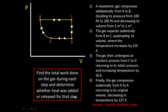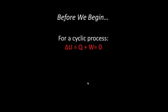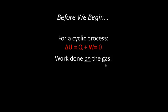We also need to determine whether heat was added or released for each step. Before we begin, let's go over some review. For a cyclic process, delta U equals Q plus W, or the change in internal energy equals heat plus work. This term always equals zero, because in a cyclic process on a PV diagram, you always start and end in the same place. We're going to focus on the work done on the gas, not by the gas. The work done on the gas is the same quantity as the work done by the gas, but one's positive and one's negative.